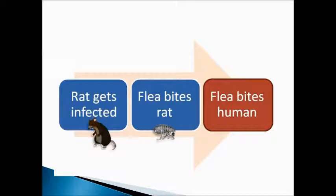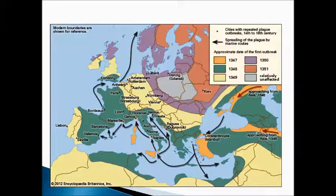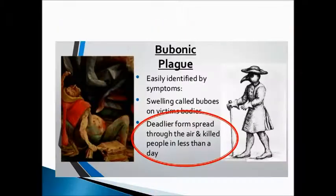How does someone get infected? An infected rat gets bitten by a flea, and then the flea bites a human — now that human has the bubonic plague. So it goes from rat to flea to human. Looking at the map, you can see how quickly it spread: it comes from Asia in 1347 (orange area), all of green is by 1348, yellowish by 1349, purple by 1350, and northern Europe by 1351. There's also a deadlier airborne form of bubonic plague — much like our flu or cold — that spreads through the air.